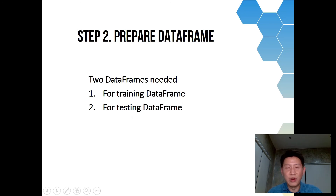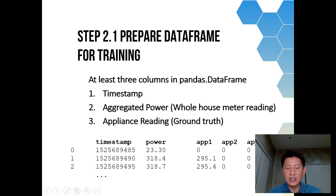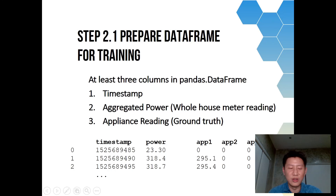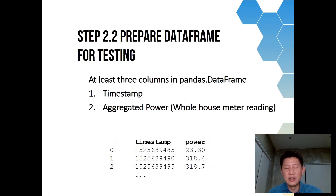After importing the library, you prepare your data frame. There are two types: one for training and one for testing. The training data frame needs at least three columns: timestamp, power, and appliance — and you can add more appliance columns if you have more in your household. This is the ground truth data. The testing data frame only needs timestamp and aggregated power — that's all you need.